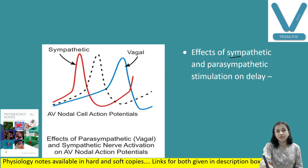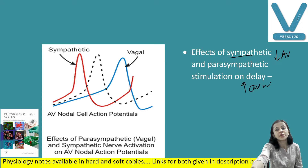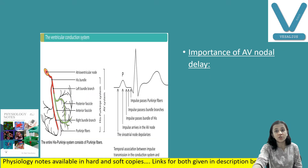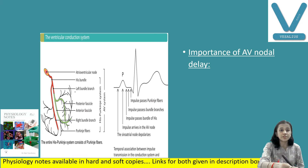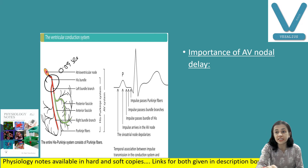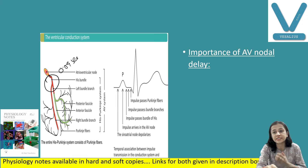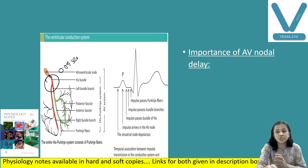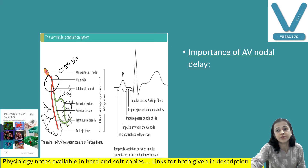Sympathetic stimulation decreases AV nodal delay, while parasympathetic stimulation increases AV nodal delay. So heart rate increases with sympathetic and decreases with parasympathetic. The importance of AV nodal delay: it is the time for the impulse to pass through the AV node (0.09 seconds), which allows the atria to complete their contraction before the ventricle starts its contraction, ensuring complete emptying of the atria.